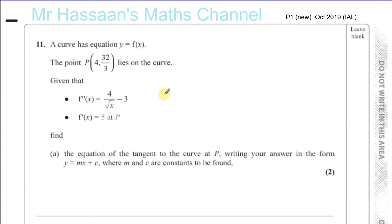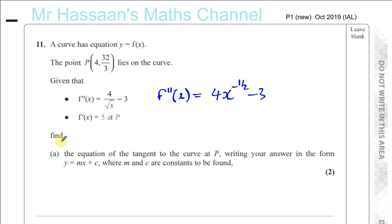Number 11 from the October 2019 P1 International A-Level paper. A curve has equation y equals f of x. The point P (4, 32/3) lies on the curve. Given that f double dash x equals 4 over root x minus 3 — rewriting that as 4x to the power of minus a half minus 3 — and f dash of x equals 5 at P. This is the second differential, and we know the gradient function equals 5 when x equals 4.